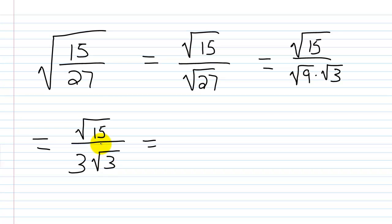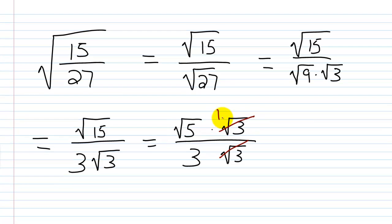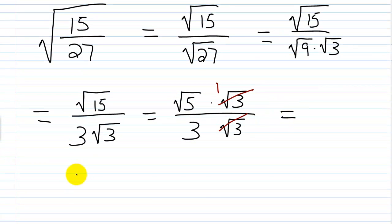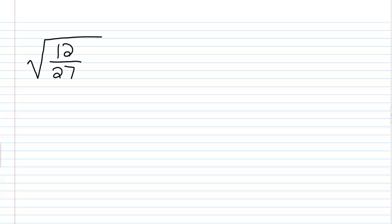Not done yet — I can further simplify. Square root of 15 can be written as square root of 5 times square root of 3. In the denominator I also have a square root of 3, as part of 3 times the square root of 3. Square root of 3 over square root of 3 is 1, so those cancel, and I'm left with the square root of 5 over 3.